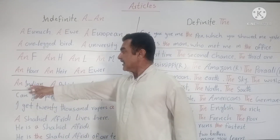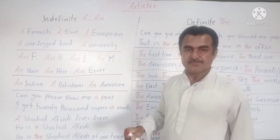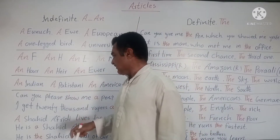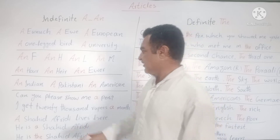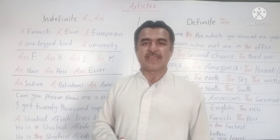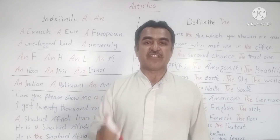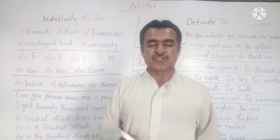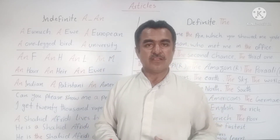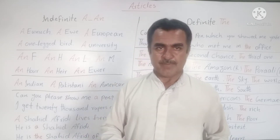For nationalities, we say 'an Indian', 'a Pakistani', 'an American'. Now you can see the usage of the indefinite article in a sentence: 'Could you please show me a pen?' Here I am not asking for a specific pen — I am talking about a general pen, any pen.